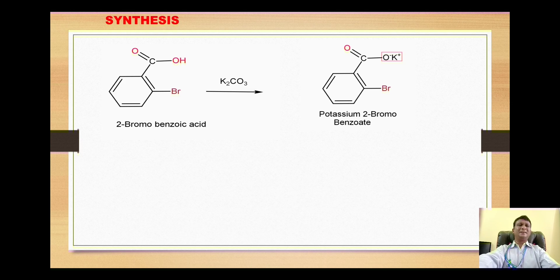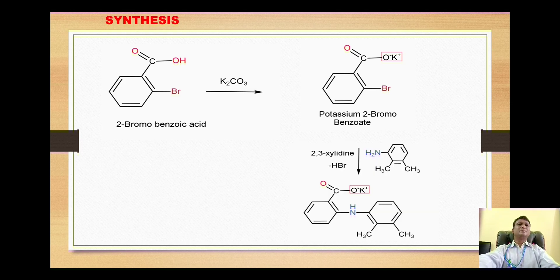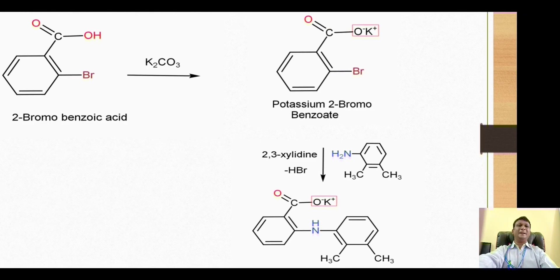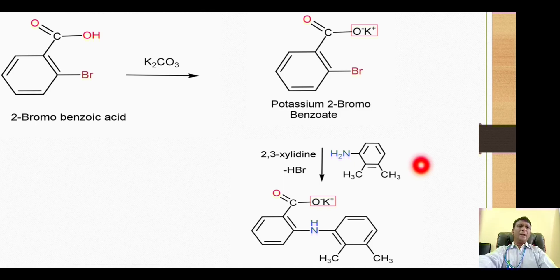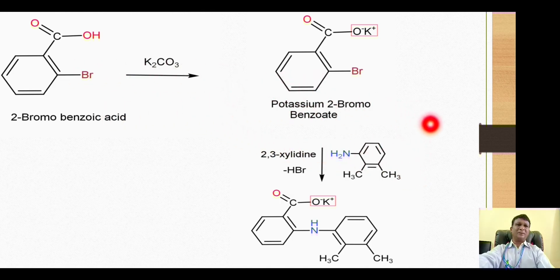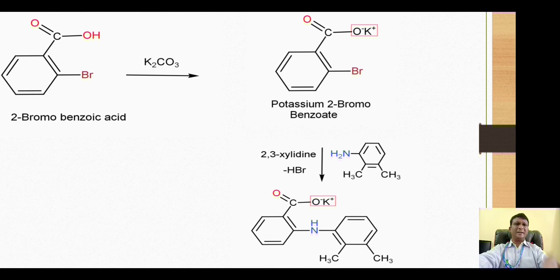Potassium 2-bromobenzoate then reacts with 2,3-xylidine. If you look at the structure, on positions 2 and 3 we have methyl groups and there is presence of an amino group, so it is called 2,3-xylidine. If the amino group is not there it is simply called xylene. In this conversion, the amino group attacks on the carbon bearing the bromine and thus brings about a nucleophilic aromatic substitution reaction on the aromatic ring.